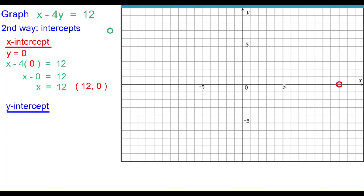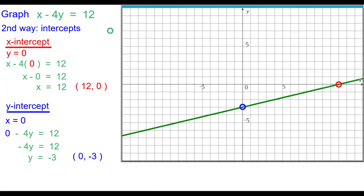The y-intercept occurs when x is equal to 0, and so we'll substitute 0 in for x and then solve for y. Dividing both sides by negative 4, we get y is equal to negative 3. So the ordered pair 0, negative 3 is our y-intercept, and we plot that one. Two points determine a unique line, so we'll connect the points. And there's our graph.